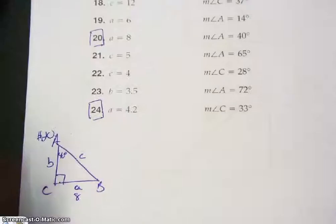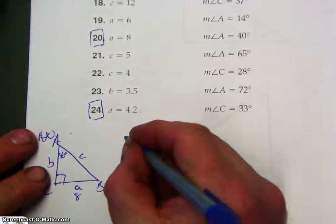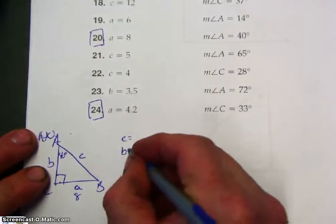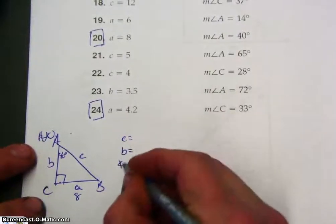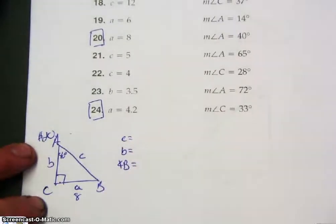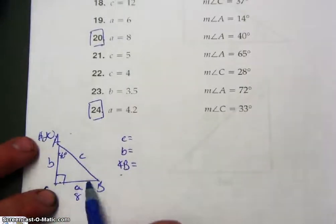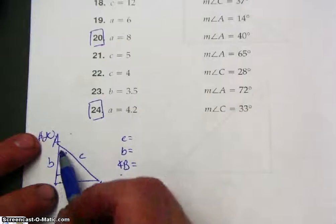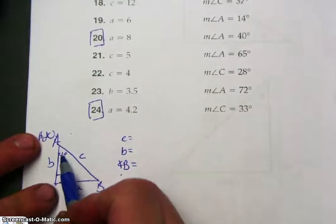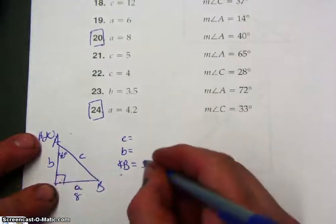All right, so we want to solve the triangle, so that means we have to find side C, side B, and angle B. Well, we can find angle B because all three angles in a triangle have to add up to 180, so 90 plus 40 is 130, minus 180 is 50 degrees.